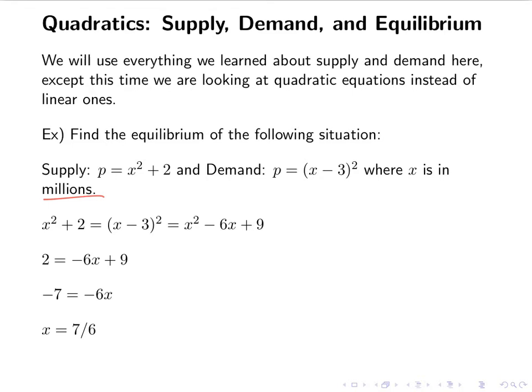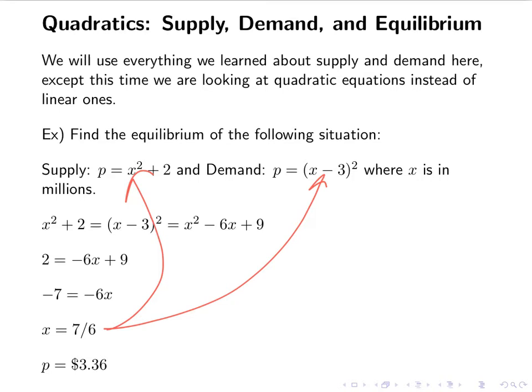You don't want to round 7 over 6 to an integer, because I don't need to have an integer number of millions. Then, because it is an equilibrium point, I also need the price. So I'm going to plug 7 sixths into either the supply or the demand — I should get the same answer either way. The price is a dollar amount, so I do have to round to 2 decimals. Plugging in 7 sixths, I should get $3.36.